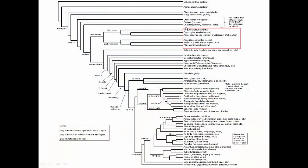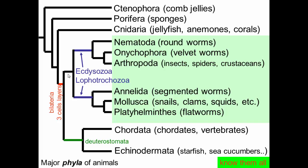Let's continue with our tour of our phylogenetic tree. We've looked at a number of these basal taxa here, and now we're moving into bilateria, and first we'll be looking at the protostomes. Within the protostomes here, we have ecdysozoans and lophotrochozoans, and we'll be looking at these six phyla.